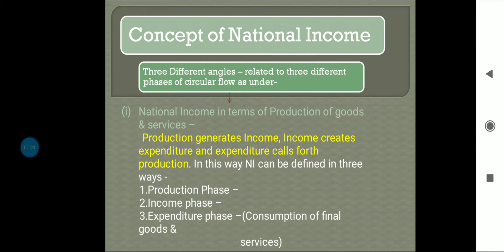There are three different angles related to the three different phases of circular flow. National income in terms of production of goods and services: production generates income, income creates expenditure, and expenditure calls forth production — that is why it is known as circular flow. National income can be defined in three ways: production phase, income phase, and expenditure phase, where expenditure means consumption of final goods and services.